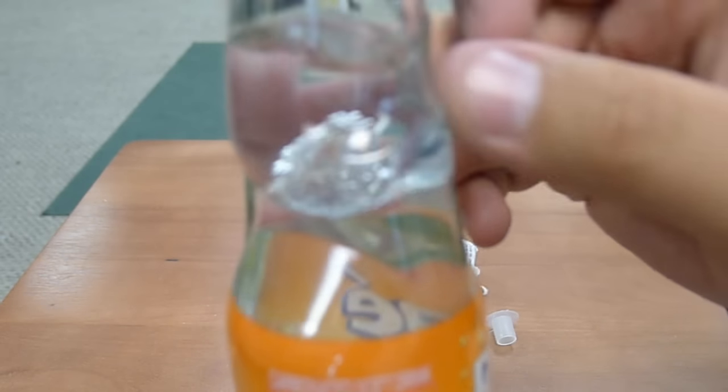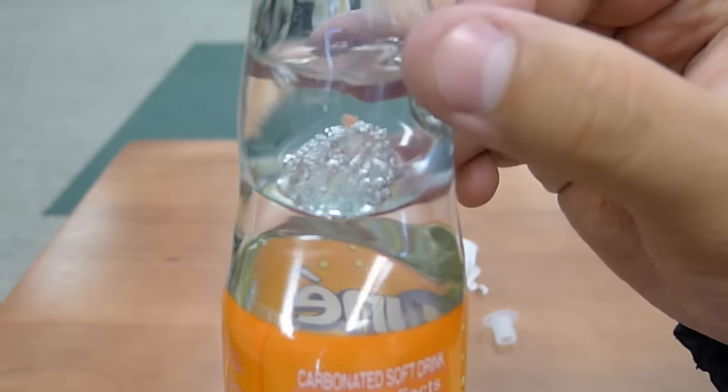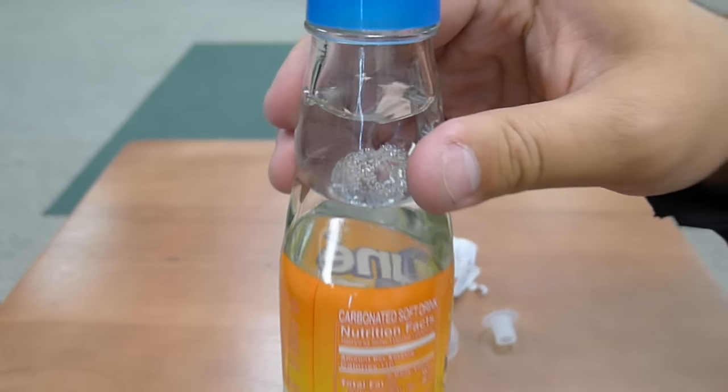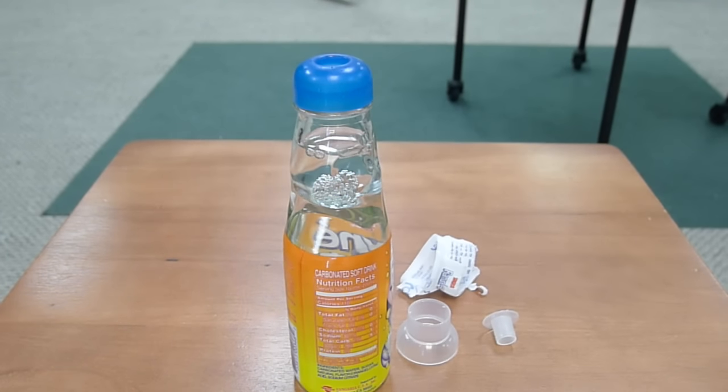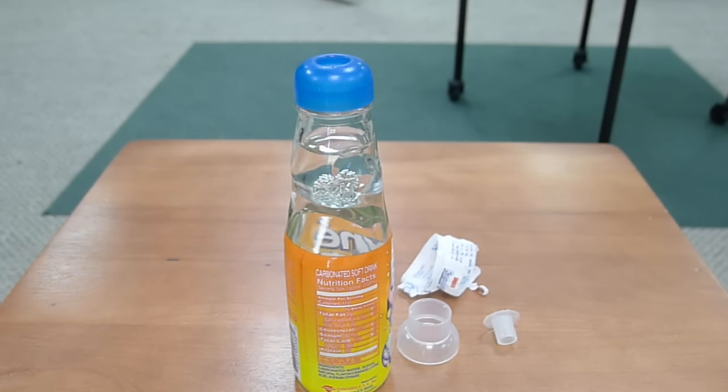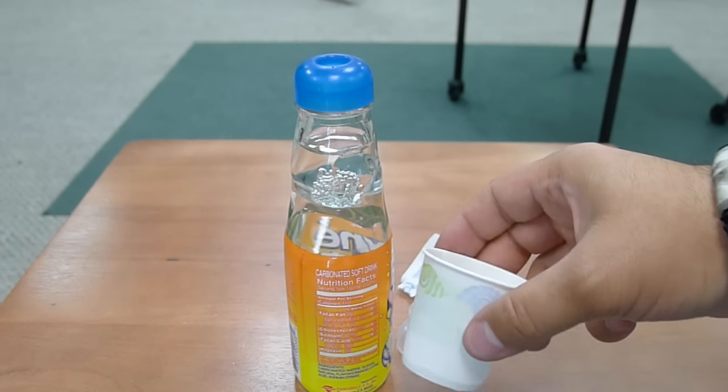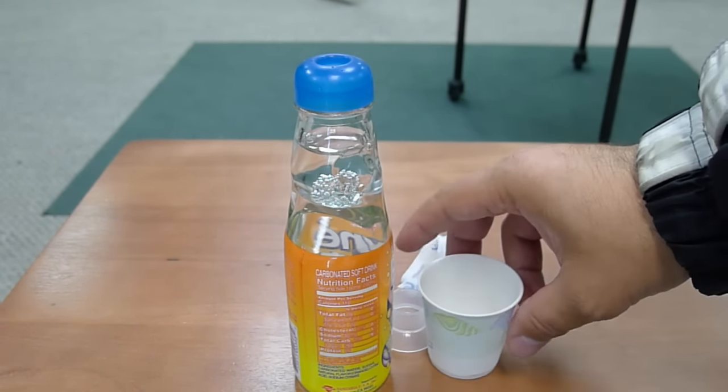Now, on the side are these two little things. When you're pouring this, which what we'll do is we'll show and demonstrate this, because after all, we're always prepared. Sorry, I had to get one of these little cups. It's a little Dixie cup.